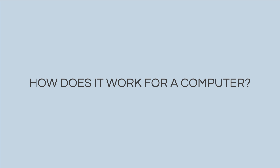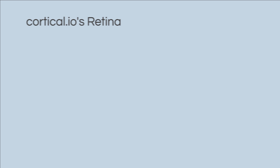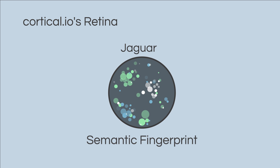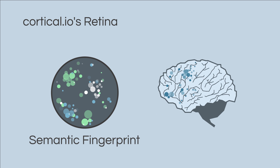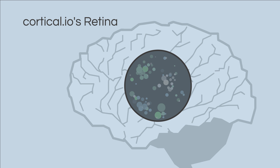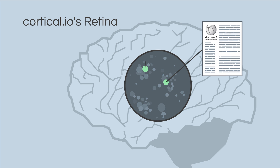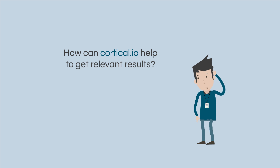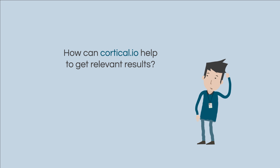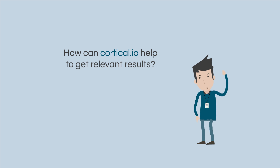Now, how does it work for a computer? Cortical.io's retina converts a word into a semantic fingerprint, a data format similar to the one used by the human brain. The retina is trained using large amounts of text to cover all possible aspects of a language.